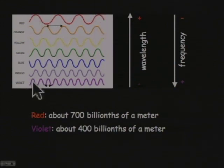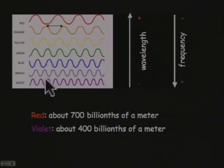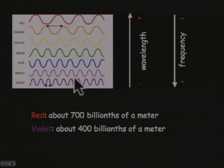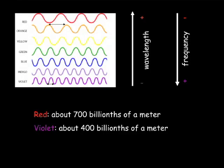So from red to violet, we have decreasing wavelength, which means increasing frequency. This distance, in reality, is really, really tiny - it's of the order of a hundred of a billionth of a meter. A billionth of a meter is called a nanometer.